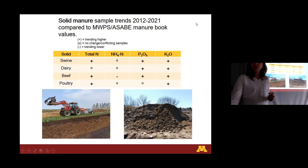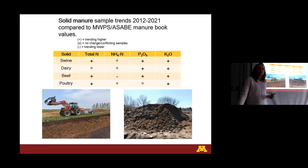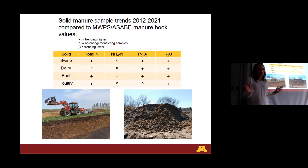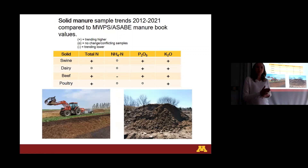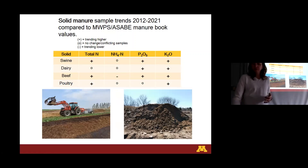This is the solid manure chart. In this one, we found that swine, beef, and poultry all seem to be trending higher. This could again mean possibly less water wastage, or it could be dietary changes. Phosphorus did seem to be increasing for all these solid manures — swine, dairy, and beef. And there does seem to be an overall positive trend in potassium for all four types. So that was kind of interesting to see that trend.